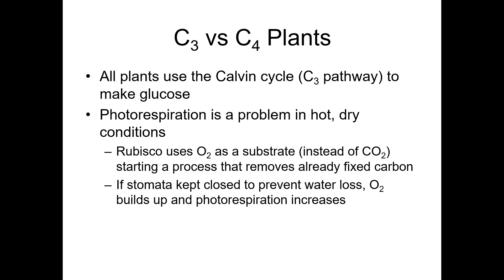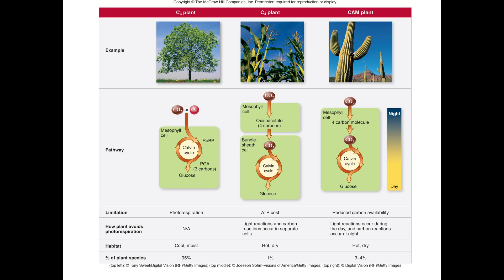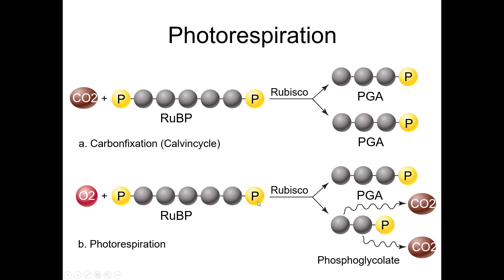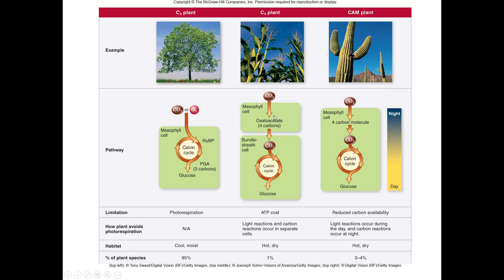One question on photorespiration. Make sure you understand that the C4 pathway is in addition to the Calvin cycle. It does not replace the Calvin cycle. I will not distinguish between C4 and CAM plants. Just make sure you understand that 95% of the plants on the planet don't use the C4 pathway. They just use the Calvin cycle.